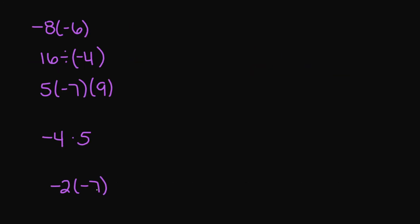Let's look at these examples. My first example: negative 8 times negative 6. The product of two integers with the same sign means I'm going to get a positive answer. So negative 8 times negative 6 is going to be a positive 48. Next: 16 divided by negative 4 equals negative 4. I have a positive 16 and a negative 4, so the answer is going to be a negative number.